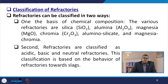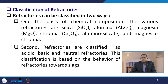Refractories can be classified in two ways. First, on the basis of chemical composition — the various refractories include silica (SiO₂), alumina (Al₂O₃), magnesia (MgO), chromia (Cr₂O₃), alumina silicate, magnesia silicate, and magnesia chromia. Second, refractories are classified as acidic, basic, or neutral refractories.